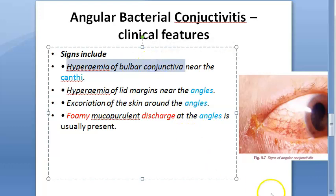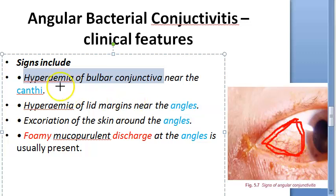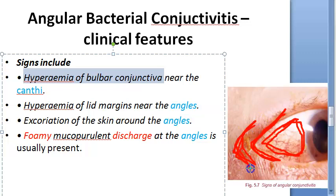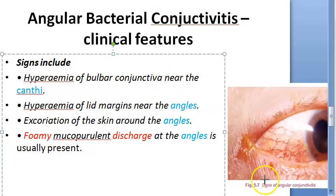The signs you will see include hyperemia of the bulbar conjunctiva specifically. The lid margins near the angles are also hyperemic. There is excoriation of the skin around the angles — excoriation meaning skin picking or abrasion. A foamy, mucopurulent dirty-white discharge is present at the angles of the eye.